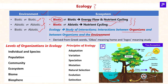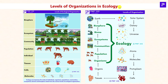Let us understand this with a simple tree ecosystem. In a tree ecosystem, there are several biotic and abiotic components. Air, soil, and sunlight are examples of abiotic components. The tree, primary consumers, secondary consumers, and microorganisms are examples of biotic components. There are various interactions taking place between these factors, and the scientific study of these interactions is what we call ecology.